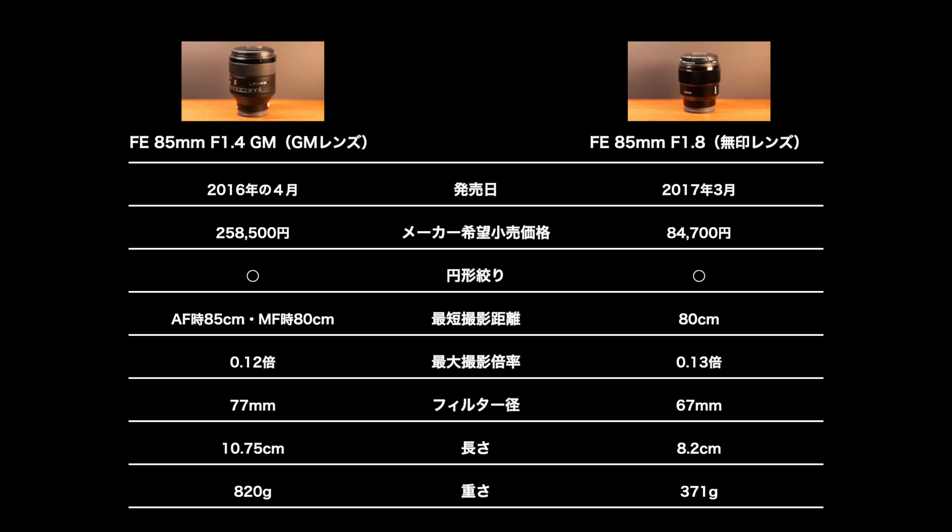GMレンズは、発売日が2016年4月で、メーカー小売価格は258,500円です。円形絞りは丸です。最短撮影距離は、AF時は85cm、マニュアルフォーカス時は80cmです。最大撮影倍率は0.12倍です。フィルター径は77mmです。長さは10.75cm、重さは820gです。